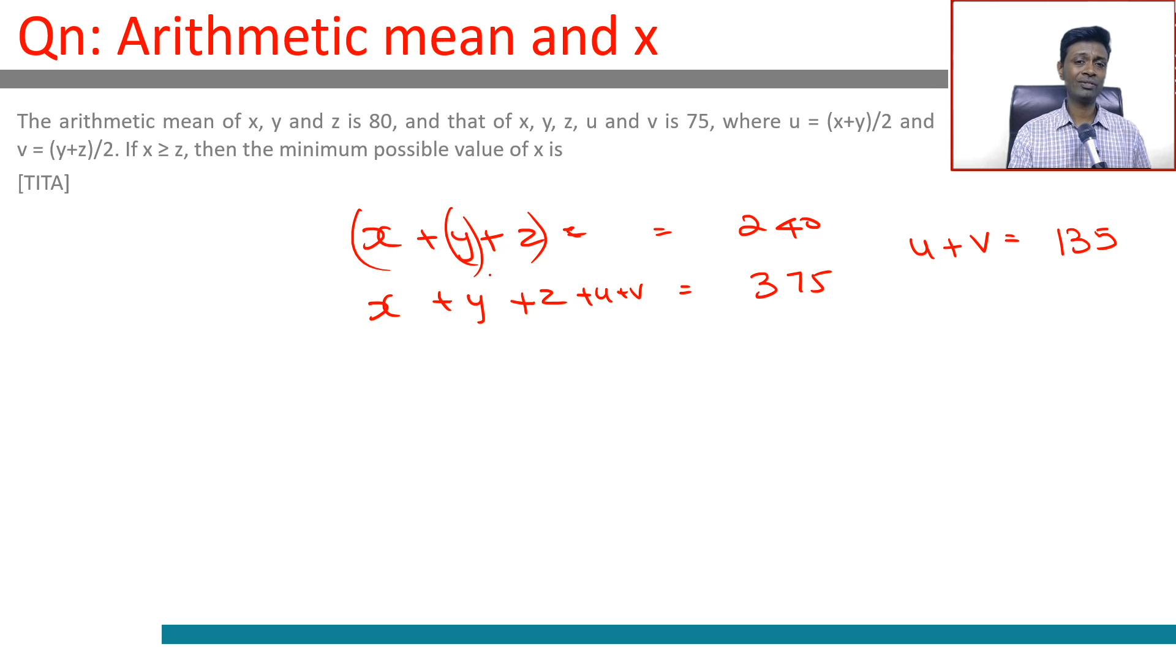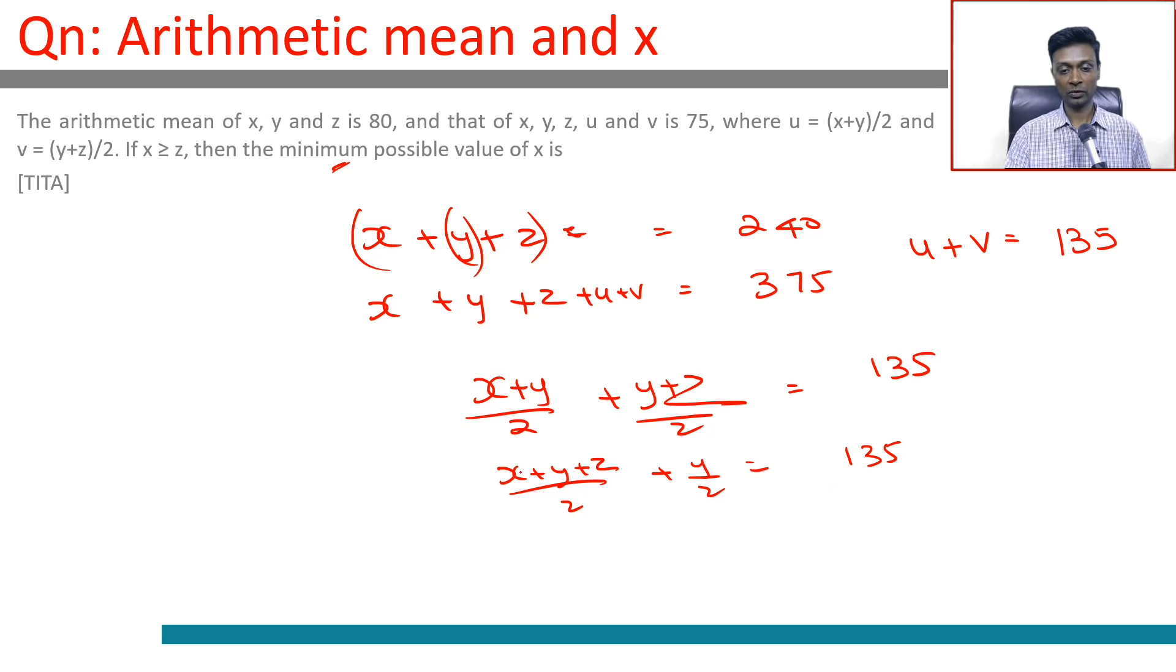To find the minimum possible value of x: (x + y)/2 + (y + z)/2 = 135, which simplifies to (x + y + z)/2 + y/2 = 135. Since (x + y + z)/2 = 120, we get 120 + y/2 = 135.